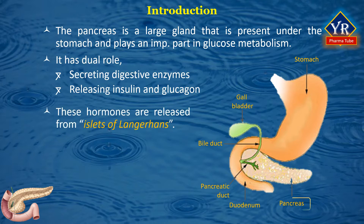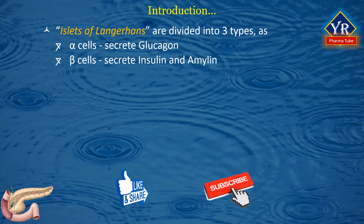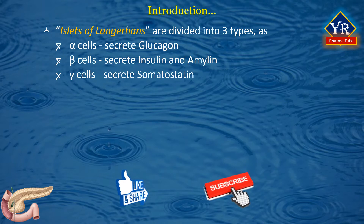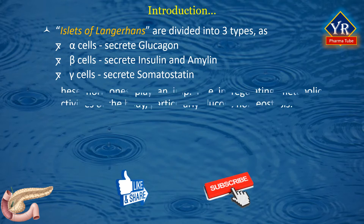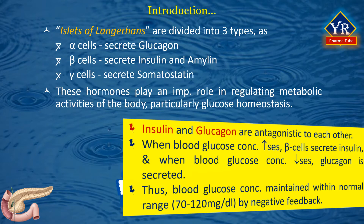These two hormones are released from the small clusters of glandular cells called the islets of Langerhans. Islets of Langerhans are divided into three types: alpha cells, beta cells, and gamma cells. Alpha cells secrete glucagon; beta cells secrete predominantly insulin and a small concentration of amylin; and gamma cells secrete somatostatin. These hormones play an important role in regulating metabolic activities of the body, particularly glucose homeostasis.